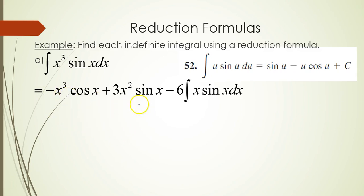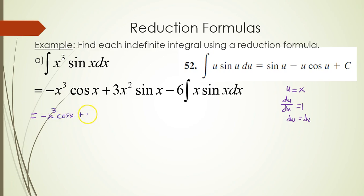We now look at x sine x dx among our integration formulas — that would be formula 52. You have a quantity in terms of x to the first power and then sine. We identify u as x, the derivative of u with respect to x is 1, so du equals dx. We keep our first two groupings as final answer material. With a minus 6 out front, the integral of x sine x gives sine x minus x cosine x.